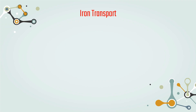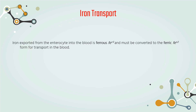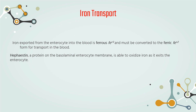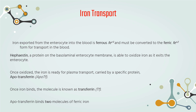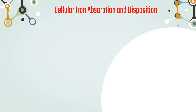Another important point is how iron is transported. Iron exported from the enterocyte into the blood is ferrous and must be converted to the ferric form for transport in the blood. Hephaestin, a protein on the basolateral enterocyte membrane, is able to oxidize iron as it exits the enterocyte. Once oxidized, the iron is ready for plasma transport, carried by a specific protein, apotransferrin. Once iron binds, the molecule is known as transferrin. Apotransferrin binds two molecules of ferric iron.